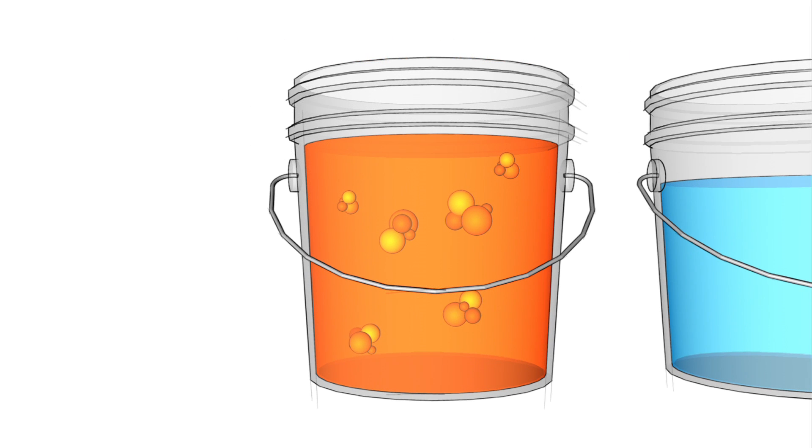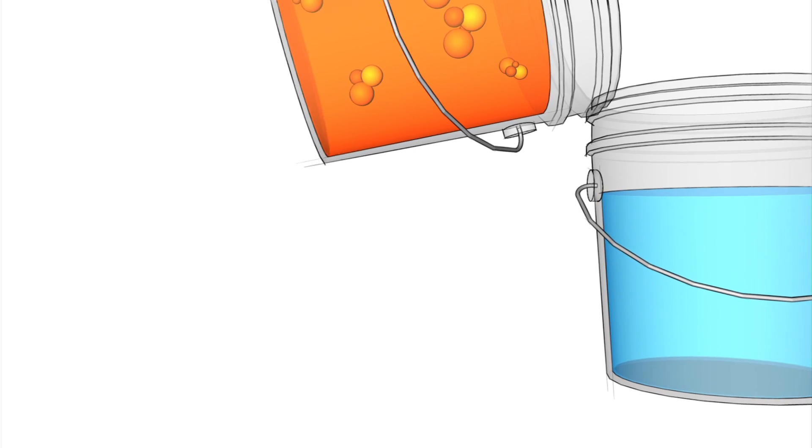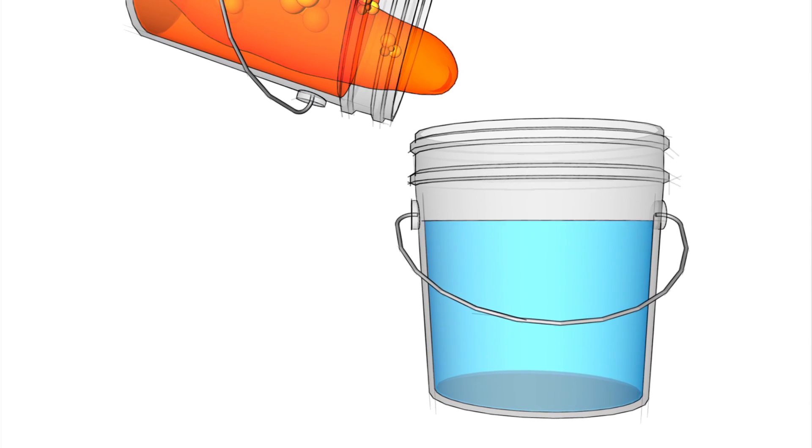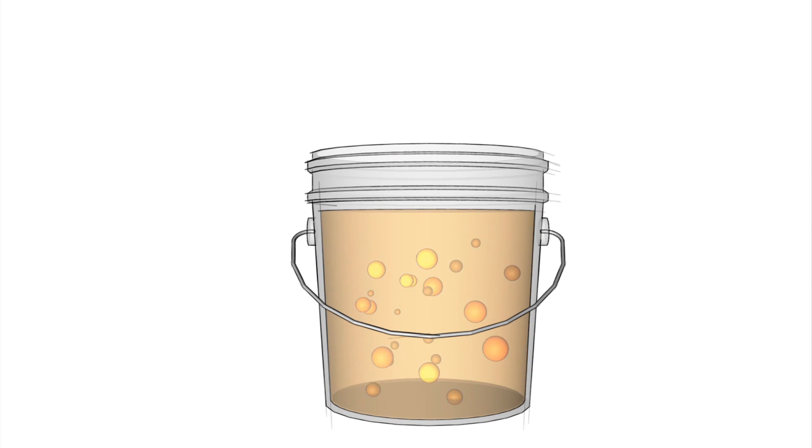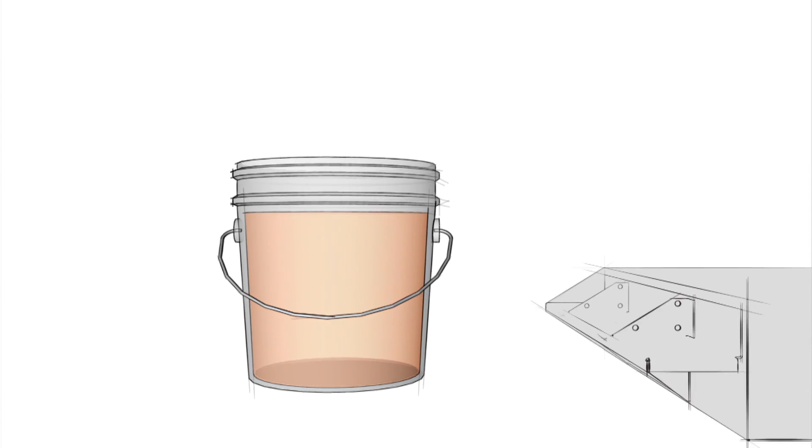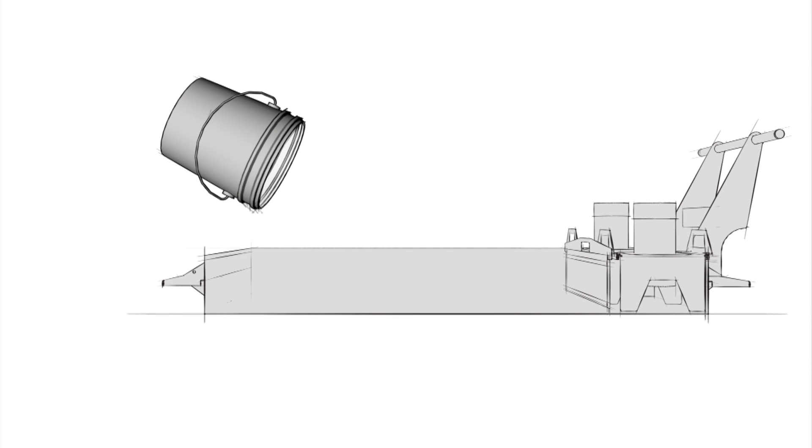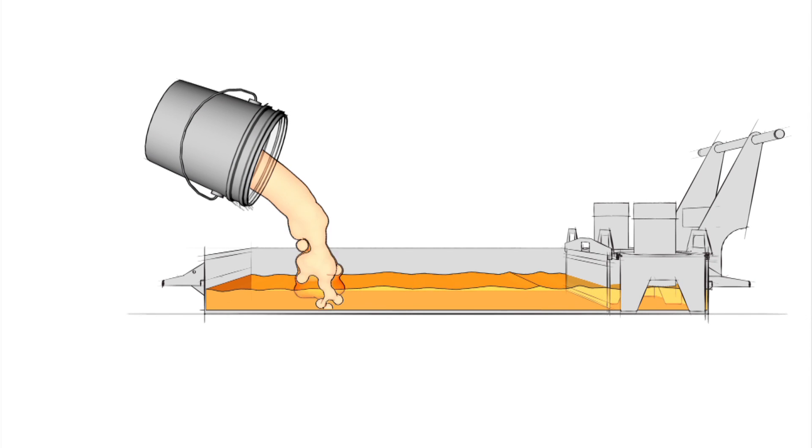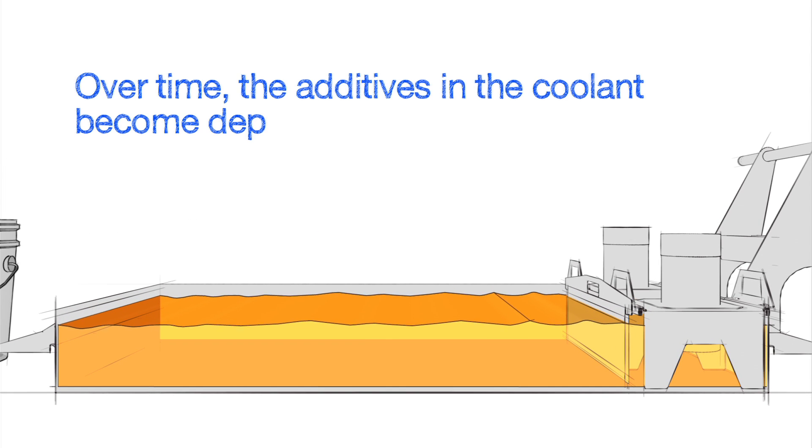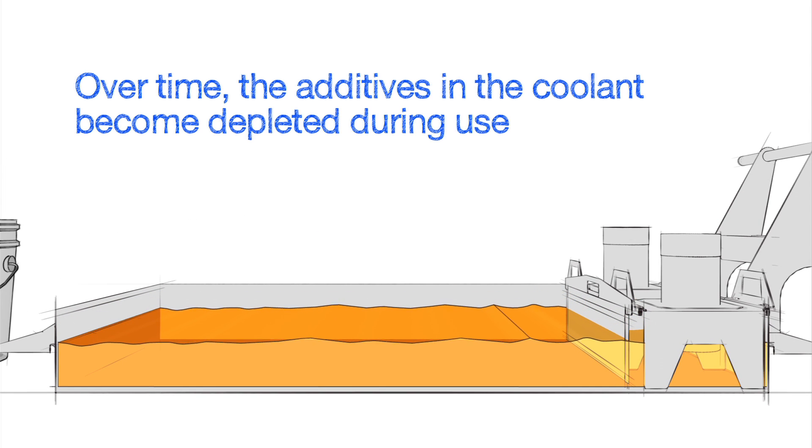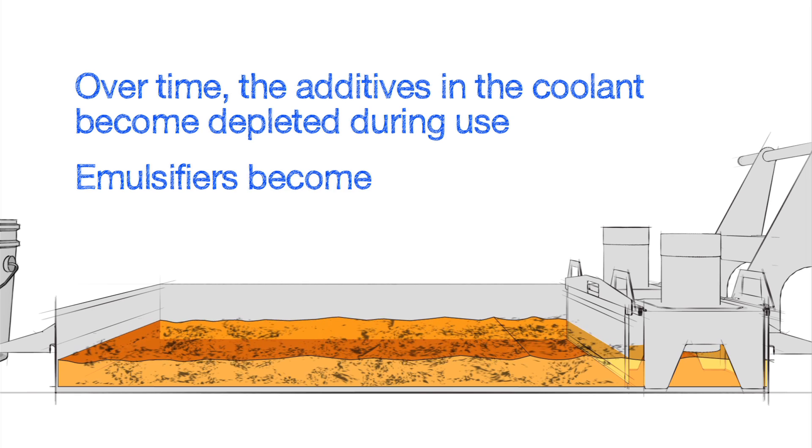New concentrate contains additives known as emulsifiers. Their purpose is to help the water and concentrate mix completely. These emulsifiers allow the coolant mixture to remain stable and well mixed during machining. The problem is that, over time, the additives in the coolant become depleted during use, resulting in emulsifiers that are less effective.